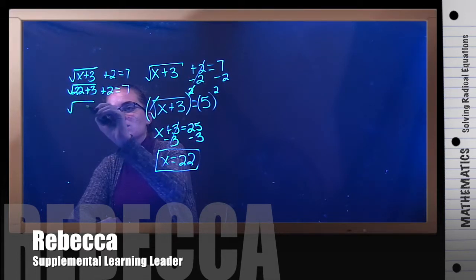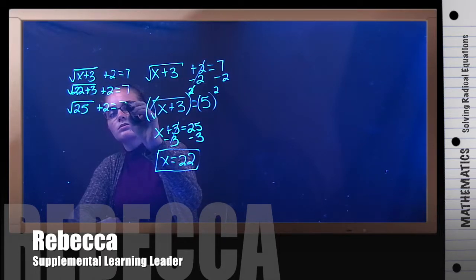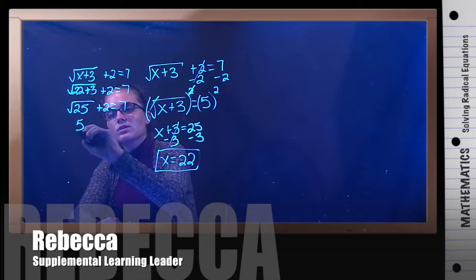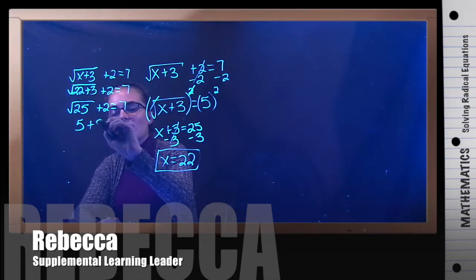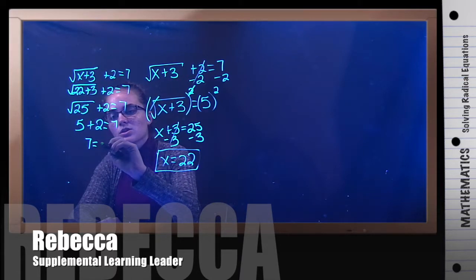22 plus 3 is 25. The square root of 25 is 5. So we have 5 plus 2 equals 7. 5 plus 2 does equal 7. So we get 7 equals 7, which is a true statement, which means that this is our final answer.